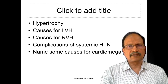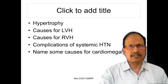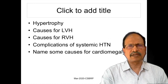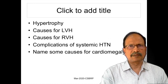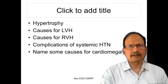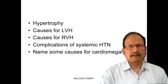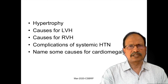Causes for right ventricular hypertrophy include pulmonary arterial hypertension, pulmonary artery stenosis, pulmonary valve stenosis, or tricuspid regurgitation. This can also be seen in Fallot's tetralogy because there is pulmonary arterial stenosis.